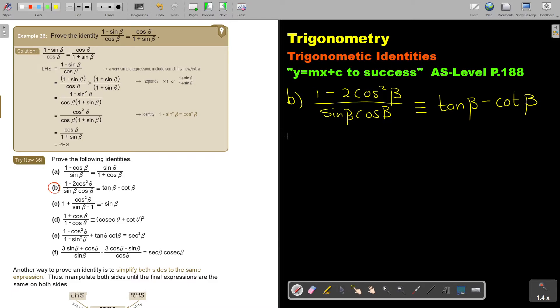I'm going to try the left, but I'm going to work with the right. And the right was tan beta minus cot beta. So what is tan? Tan is sin beta over cos beta. And cot is cos beta over sin beta.